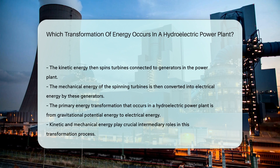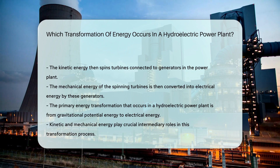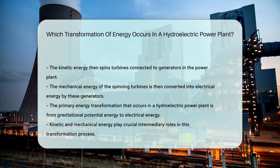And voila! That's how we get electricity from water. So in a nutshell, the primary energy transformation that occurs in a hydroelectric power plant is from gravitational potential energy to electrical energy, with kinetic and mechanical energy playing crucial intermediary roles.